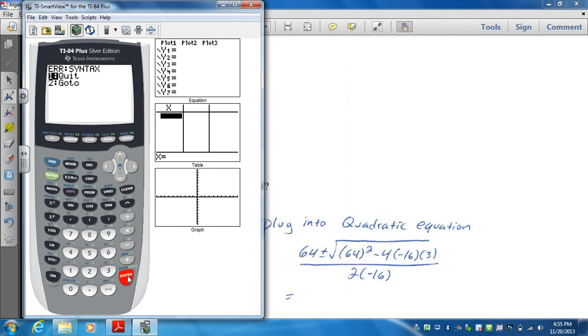Close that parenthesis. Oops. I think I forgot a parenthesis on here. Okay, so that's going to be my numerator. And I want to divide all that by 2 times negative 16.